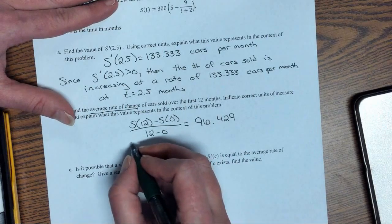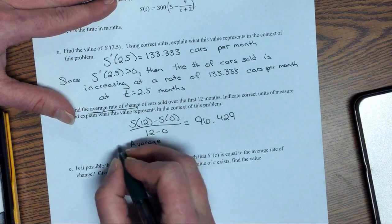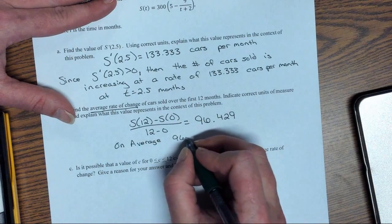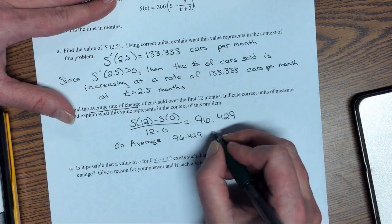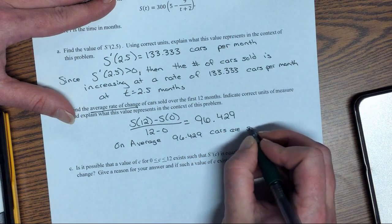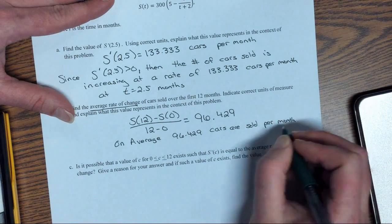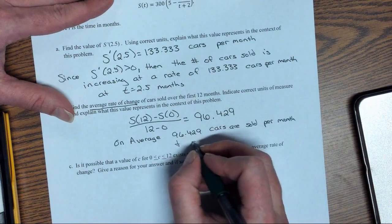Remember, you can actually plug this straight into your calculator. We should get 96.429. That means on average, 96.429 cars are sold per month. And sales are increasing.